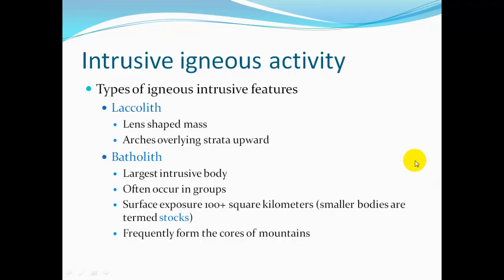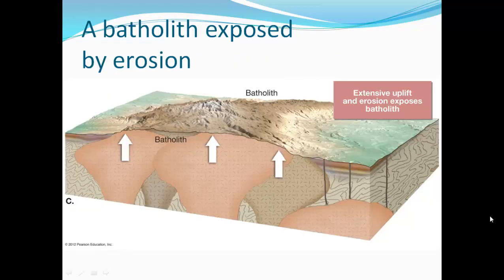The laccolith is a lens-shaped mass with a mushroom cap that arches overlying strata upward. The batholith is the largest intrusive body; they often occur in groups, with surface area exposed exceeding 100 square kilometers. Smaller bodies are called stocks. Batholiths frequently form the cores of mountains — as the surface rock gets eroded and they're lifted up, we find these cores of nice granitic mountains.